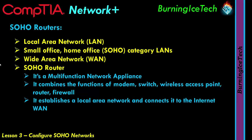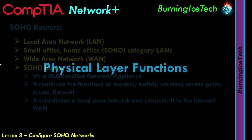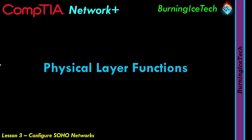Your router establishes a local area network, which makes sense since one of its functions is to act like a switch. Since the router has so many functions, let's use the OSI model to analyze them. We'll start with the physical layer, which is layer one. If you don't know the OSI model, check the previous video — lesson two in this playlist covers it fully.